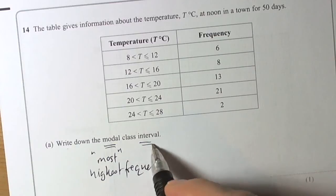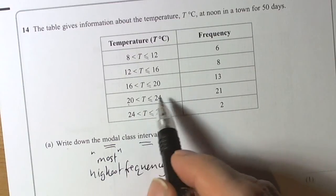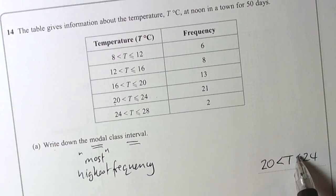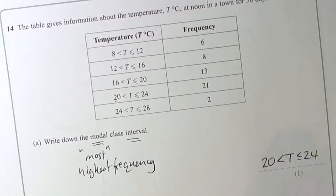Now remember, an interval is from the beginning to the end of the group, so we write down the whole of that: 20 less than T less than or equal to 24. So the temperatures were greater than 20 but less than or equal to 24 degrees C, and that'll be the modal class because it happens the most often.